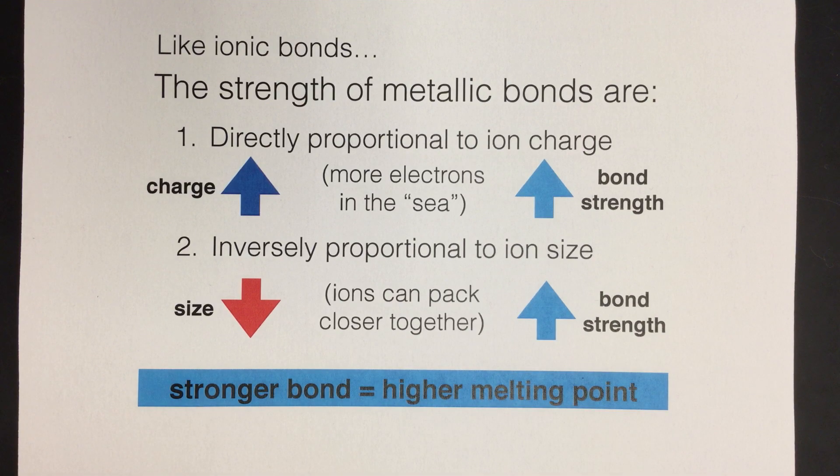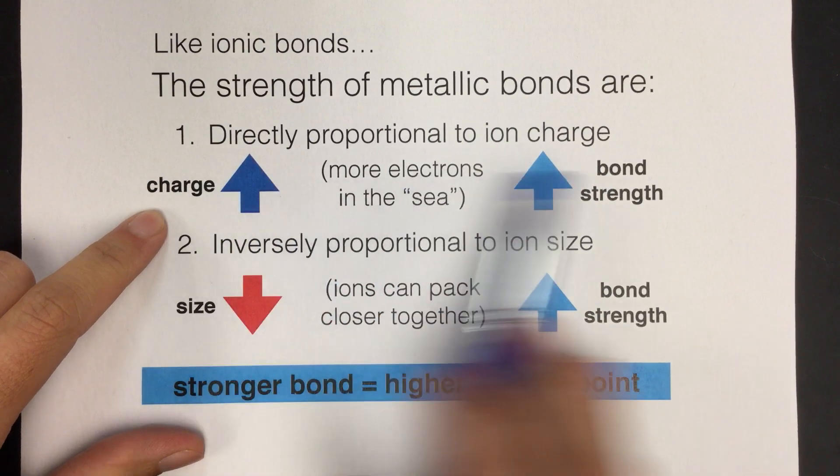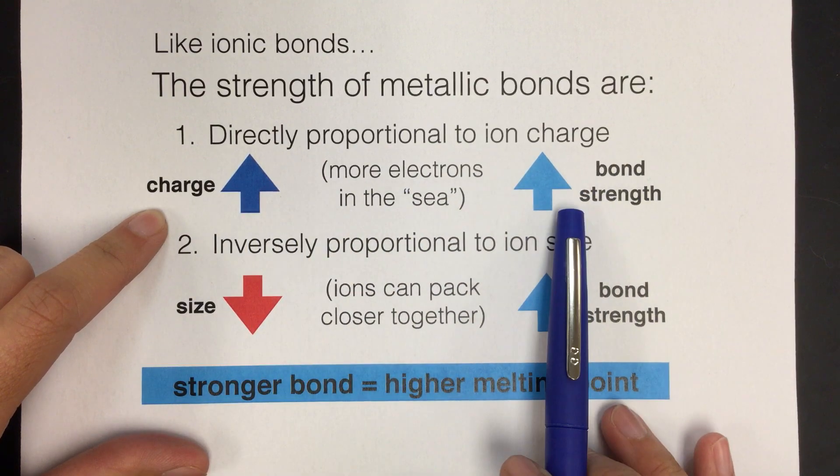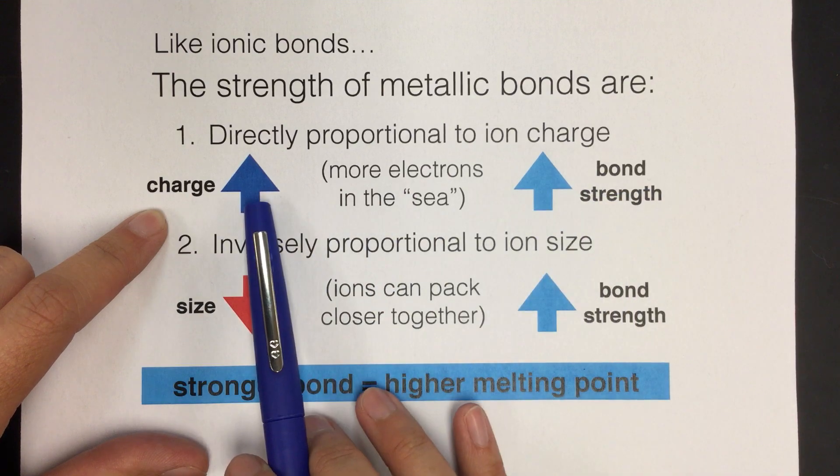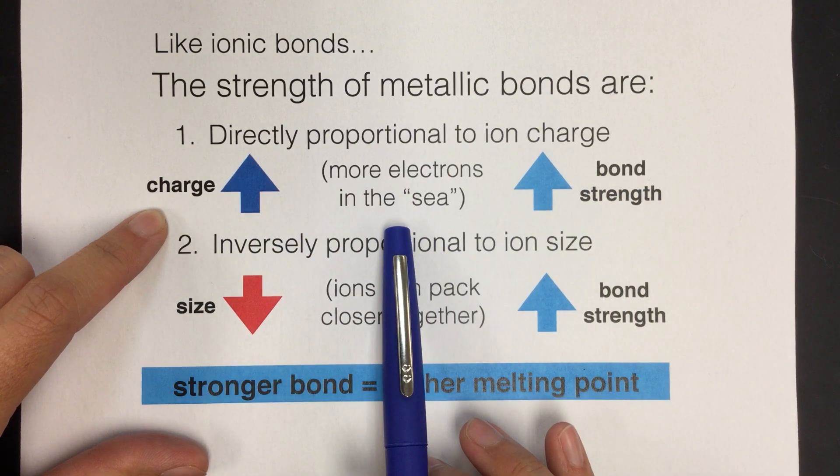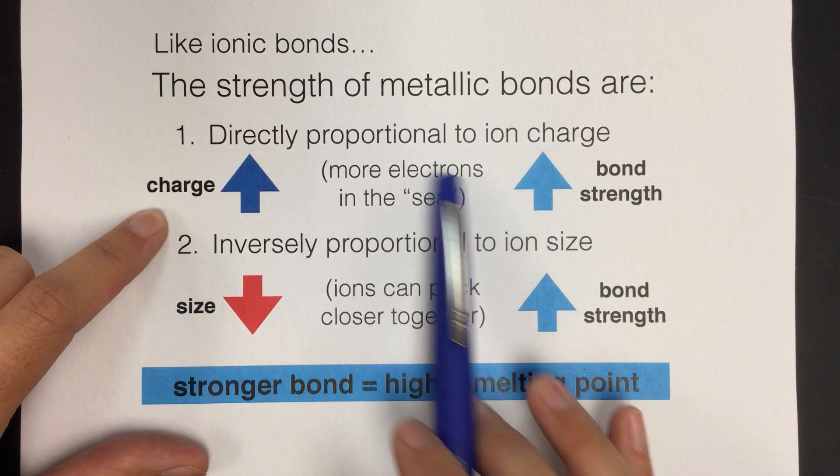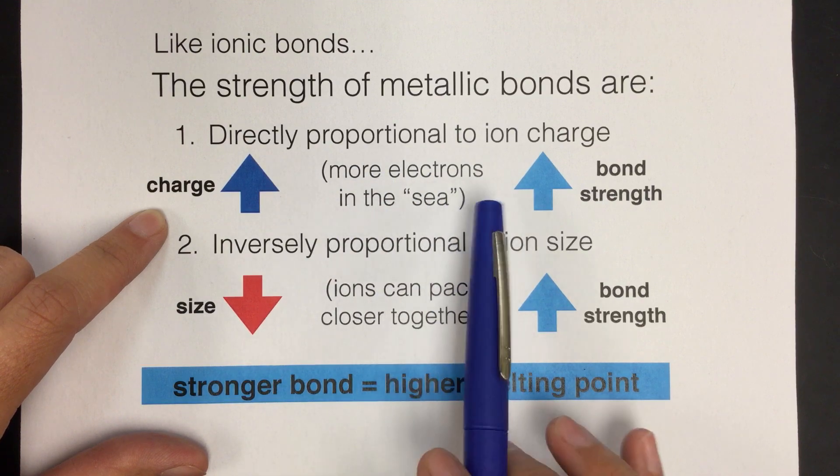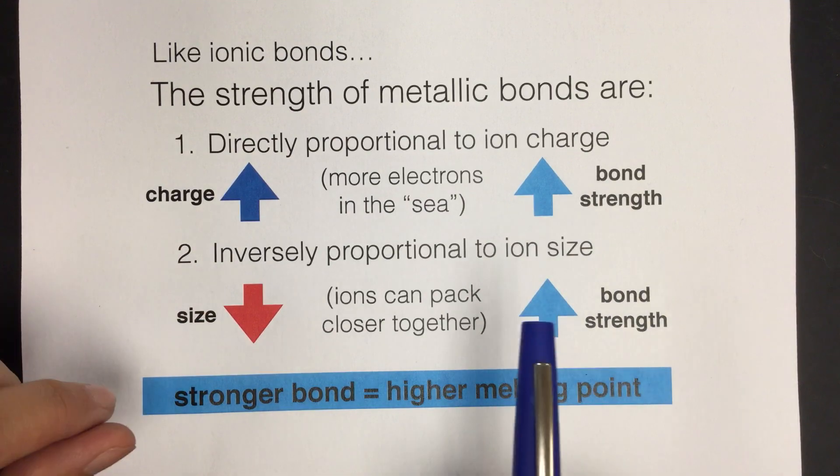The first factor that affects the strength of a metallic bond is the charge. This factor is directly proportional to the bond strength, so if you have a greater charge, then you're going to have a stronger metallic bond. That's because if the charge is bigger, it means that more electrons were contributed into the sea of electrons that is in the metallic bond, and that will create a stronger bond within the material.